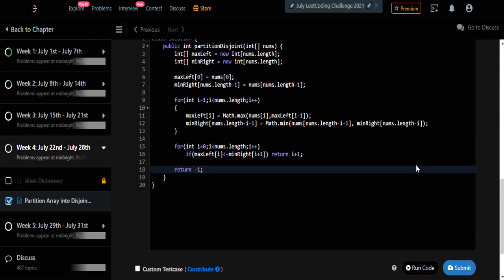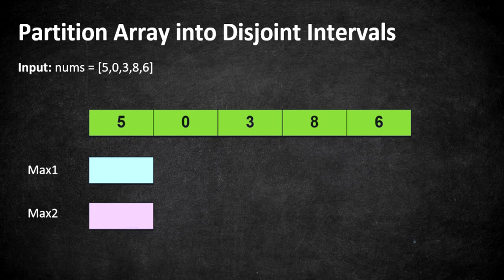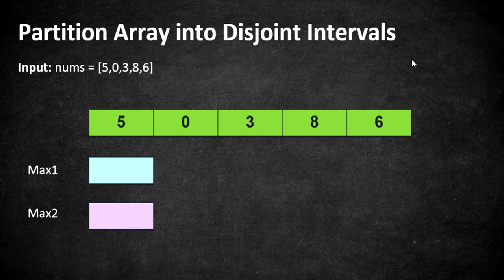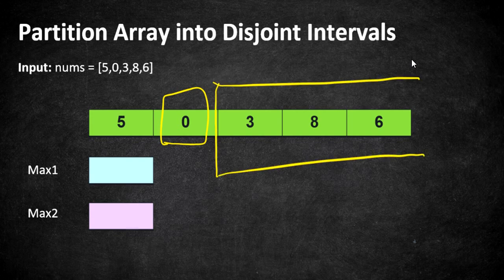Now let's solve this in constant space. The idea is the same but the implementation differs. If all elements in the left subarray must be smaller than all elements in the right, the left subarray must contain the smallest element of the array. For example, if zero is at the first position, the left subarray length is one. If the minimum element is at a later position, our partition must exist somewhere after that index, but that's not the only criteria — all other elements must also satisfy the condition.